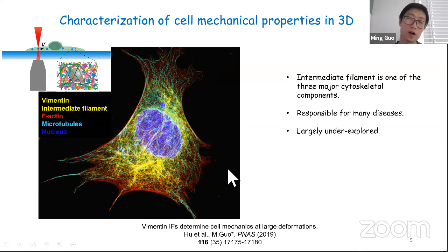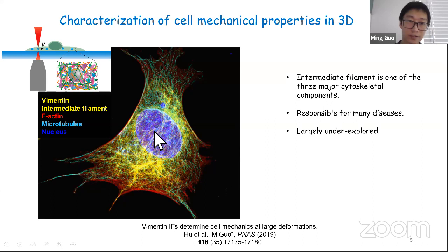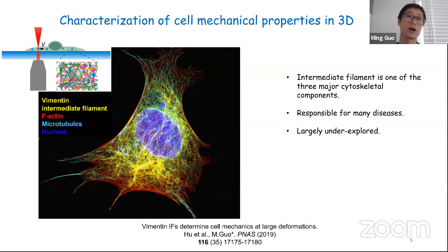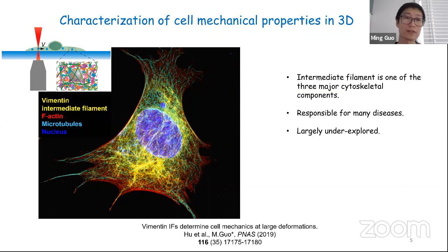The first project is about intermediate filaments in the cytoskeleton. There are three major types of cytoskeletal components: f-actin, microtubules, and the third type — intermediate filaments. Shown here is a mouse embryonic fibroblast where the yellow network is vimentin intermediate filaments, which take up a lot of space in the cell but turn over much slower. Intermediate filaments remain largely underexplored. Vimentin, which I'll discuss today, is a known marker for epithelial-to-mesenchymal transition, and studies show that knocking out vimentin slows down 2D migration quite a bit.